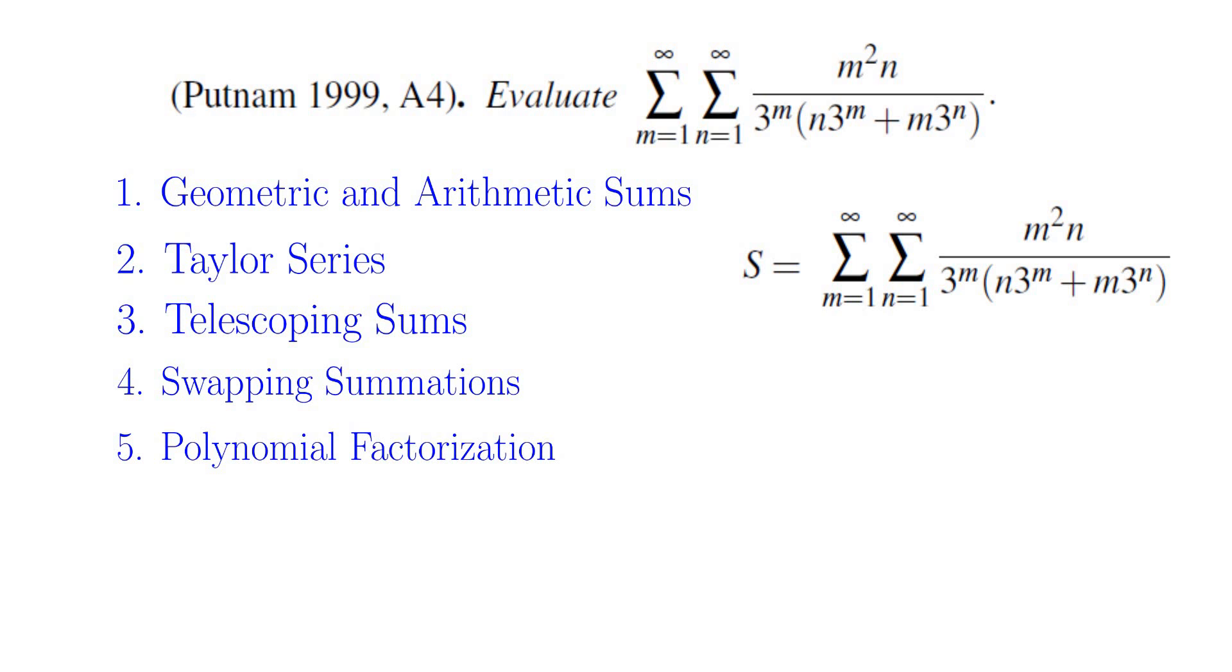So if you change the variables m to n and n to m, you're going to get the sum of n squared m divided by 3 to the power of n, parentheses m times 3 to the power of n plus n times 3 to the power of m.